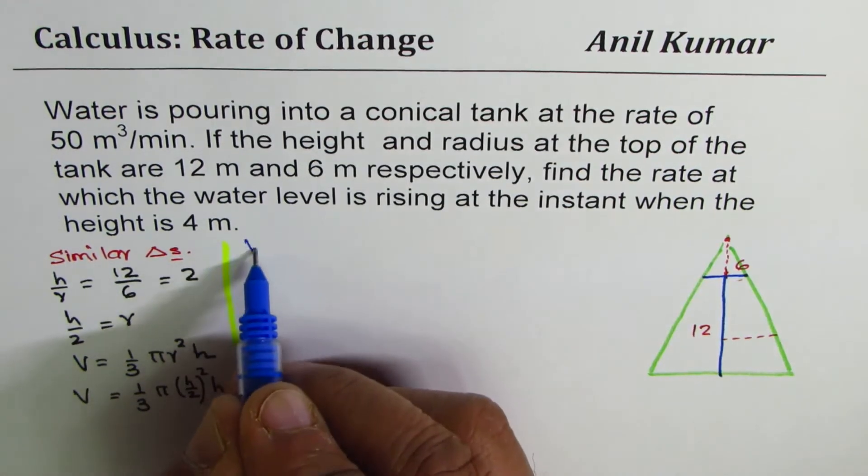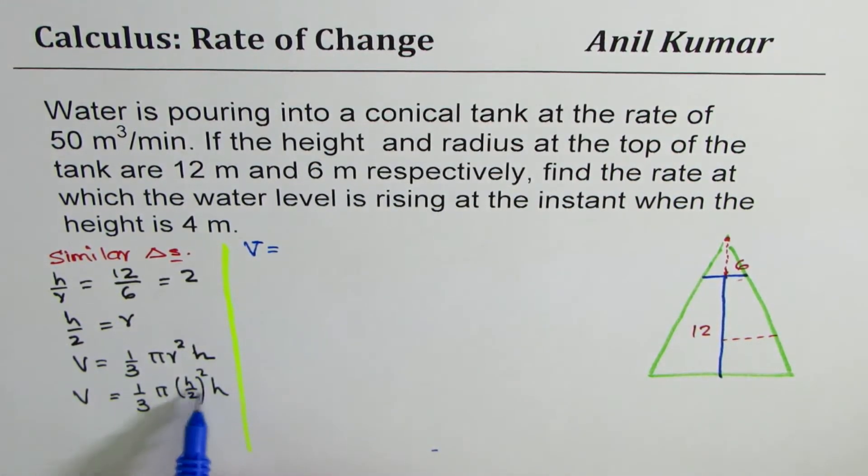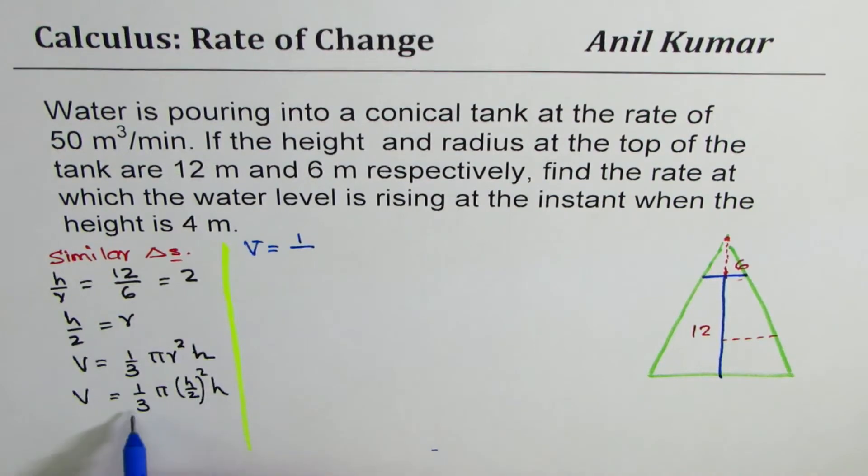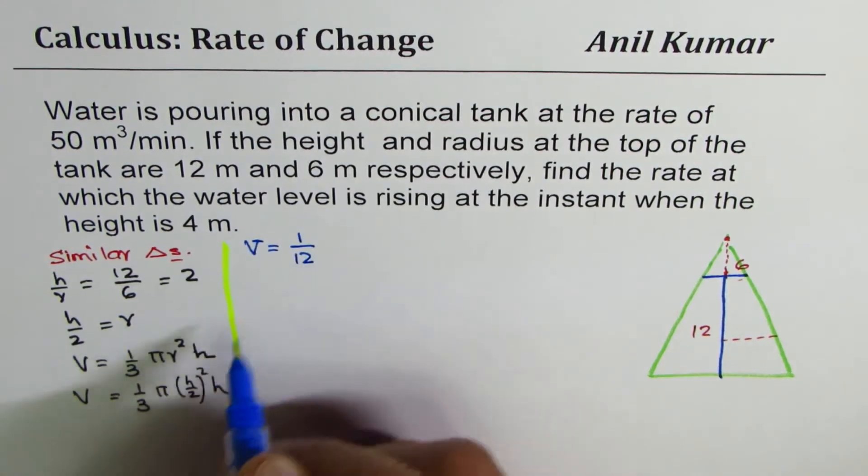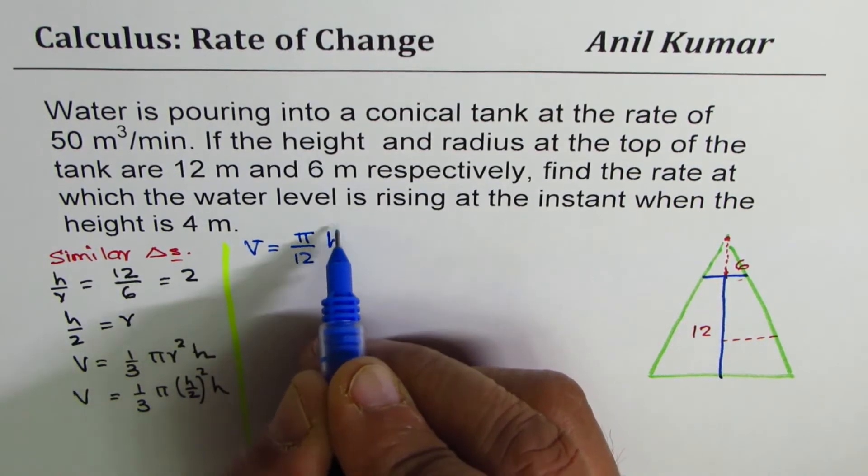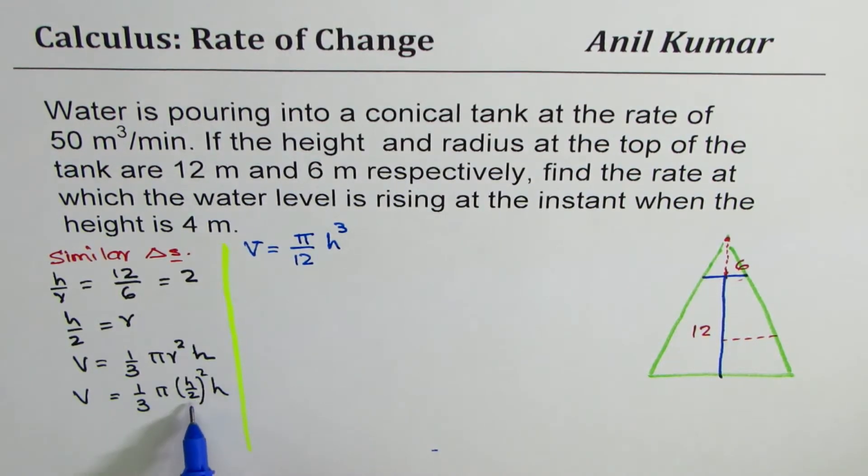Let's rewrite this. We have volume equals... So h square and h will give you h cube. And here we have 4. So we have 1 over 4 times 3 is 12. Let me write this as pi over 12 and we have h cube. Is that clear to you? Since h square, 2 square is 4.